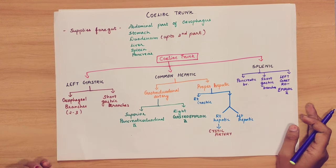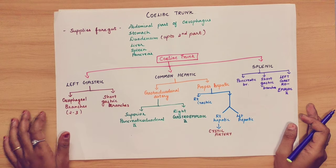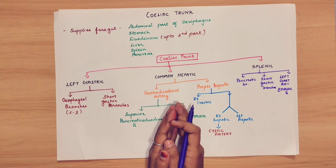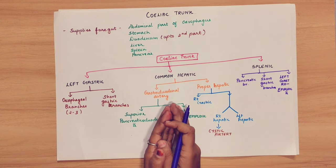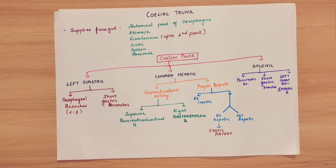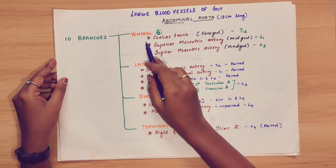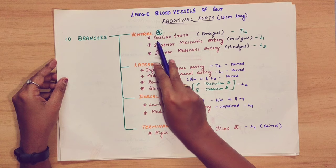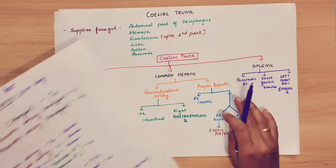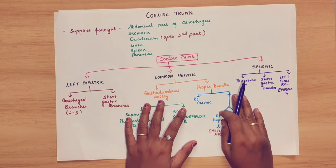Welcome to my channel. Today we will see about the celiac trunk. The celiac trunk is a main branch. We already have 10 branches in the abdomen. It is an important branch in the ventral branch. The celiac trunk is also very important.